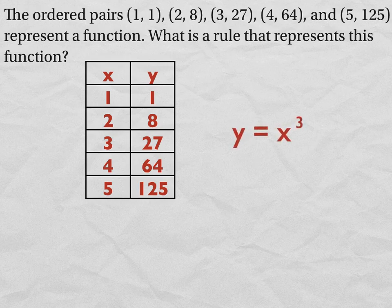So your equation here, or your rule, is going to be y equals x to the third power. 1 cubed is 1, 2 cubed is 8, 3 cubed is 27, 4 cubed is 64, and 5 cubed, or 5 times 5 times 5, is 125.